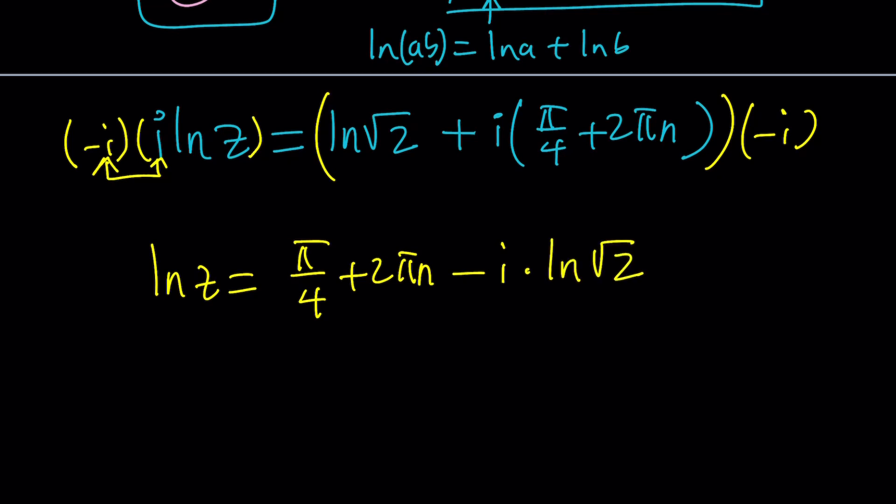Again you can write square root of 2 as 2 to the power of 1 half and bring the 1 half to the front so on and so forth. Those are minor details. You don't really have to worry about it. But this is ln z and we do need to find z. How do you find z from here?